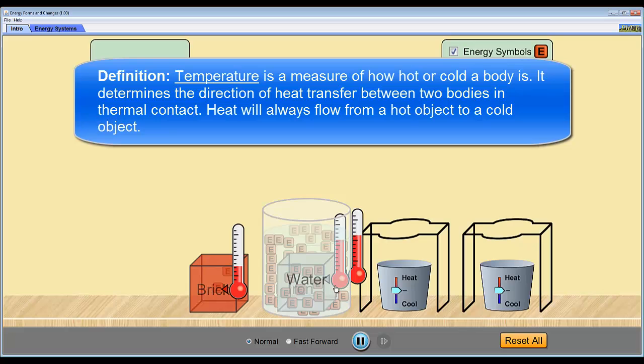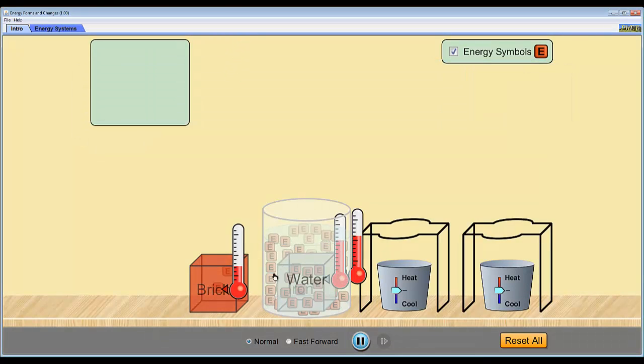Now, because the water had so much more internal energy to begin with than the iron, the change in temperature of the water is smaller than the change in temperature of the iron. So the iron drops by a larger amount than the water increases, even though the same amount of energy has been transferred away from the iron and into the water. And that's because what we call the thermal capacity of the water is much higher than the iron. But that's the subject of a later lesson.